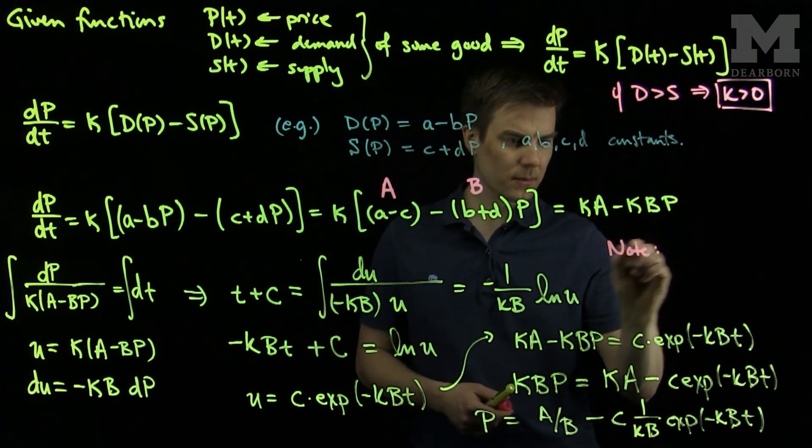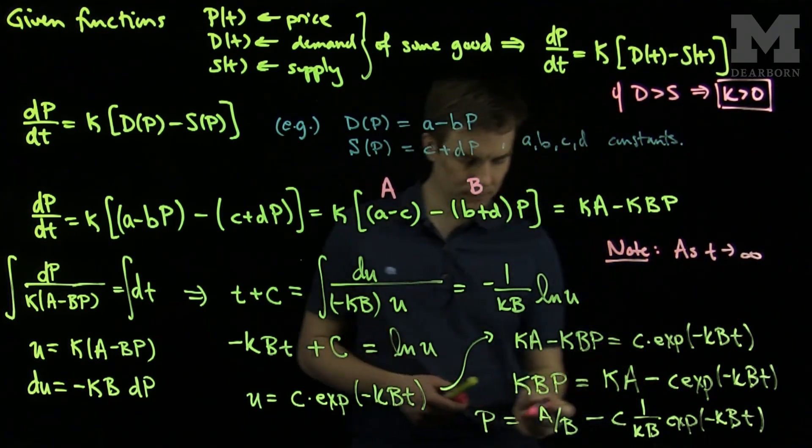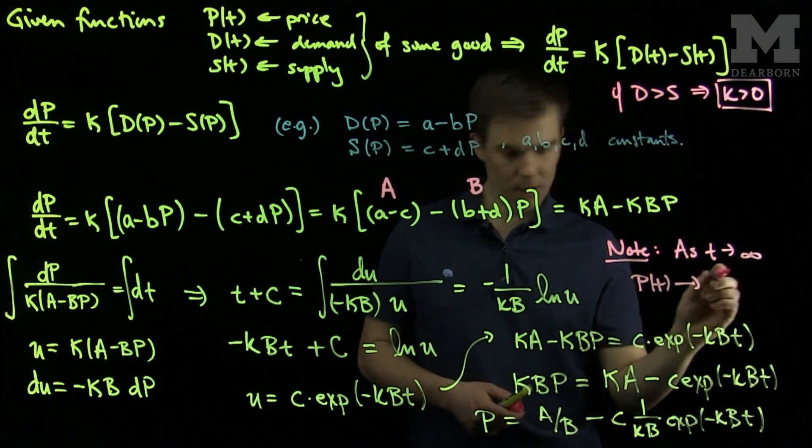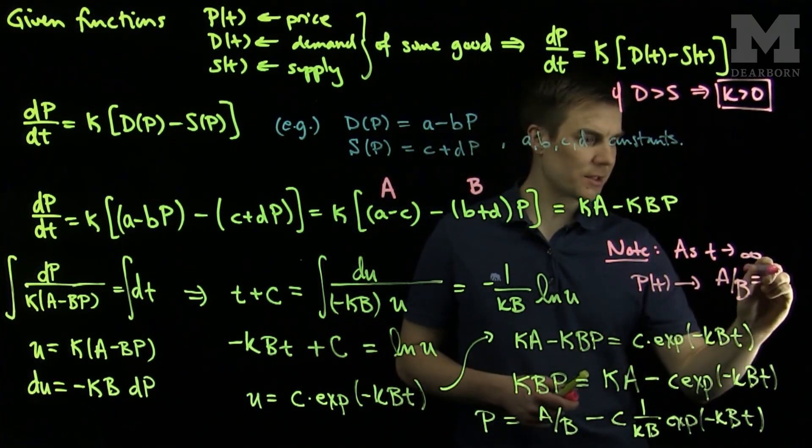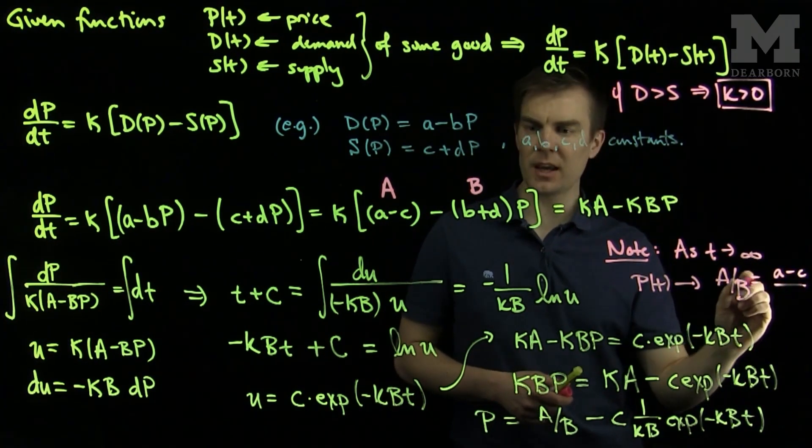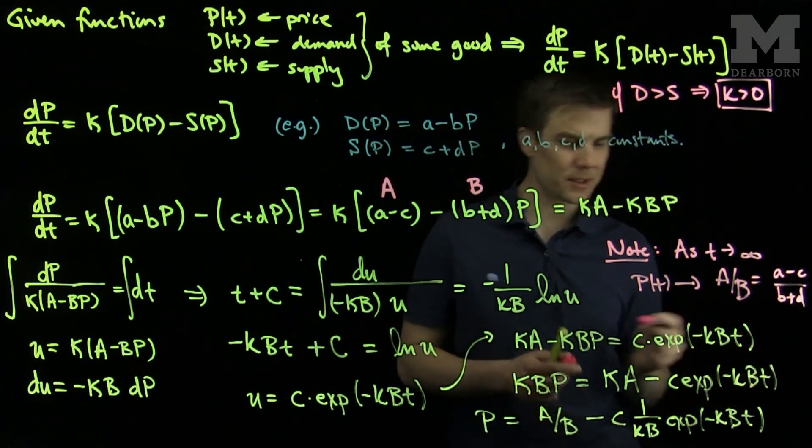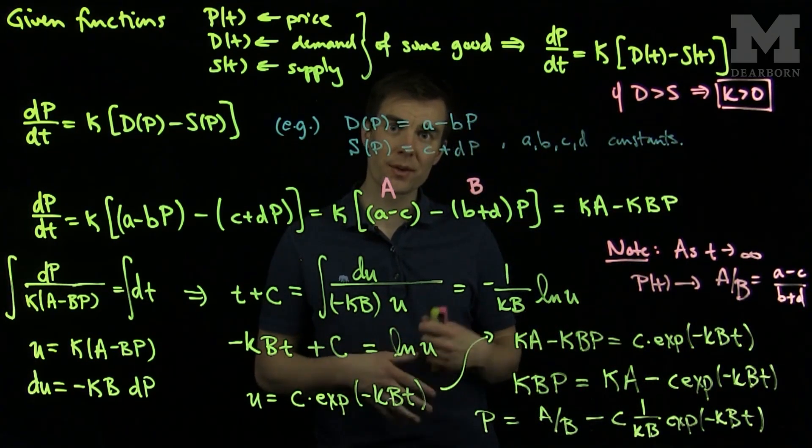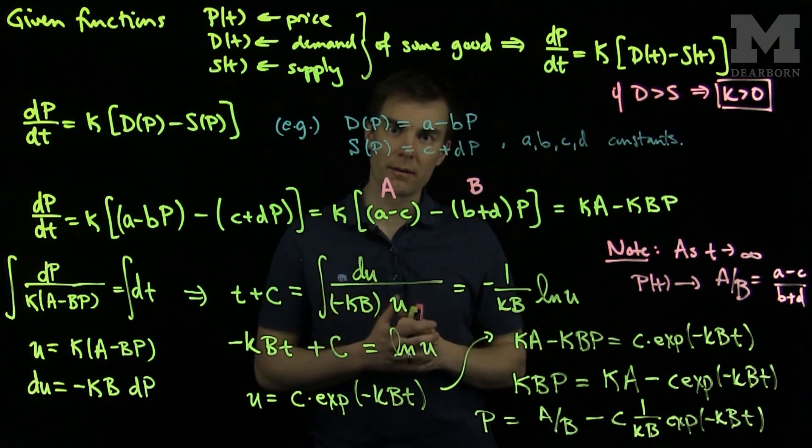As t approaches infinity, P(t) approaches a over b, which is (a minus c) over (b plus d). So this price over here is the equilibrium price of the system assuming the supply and demand follow linear functions of the price.